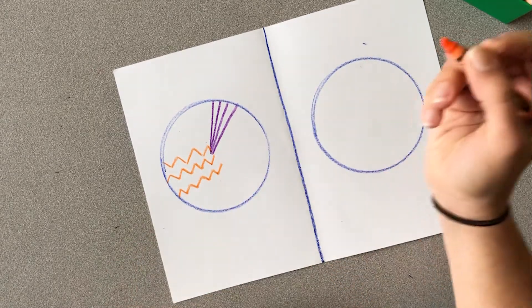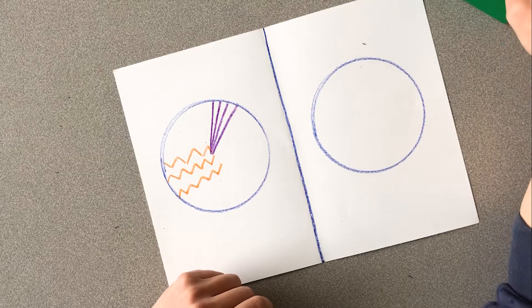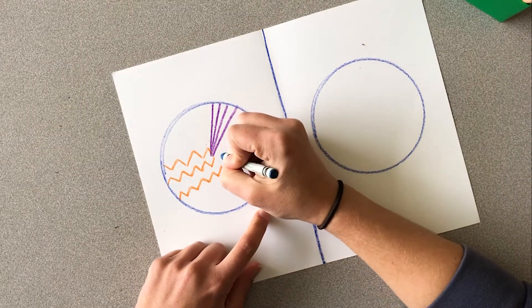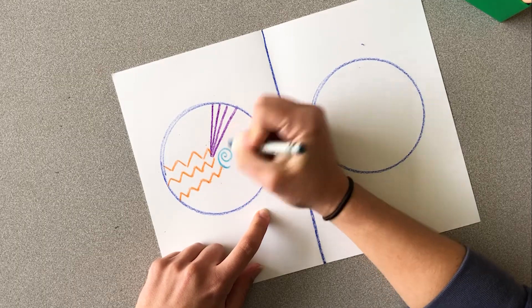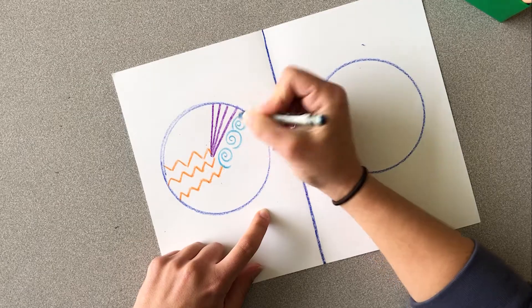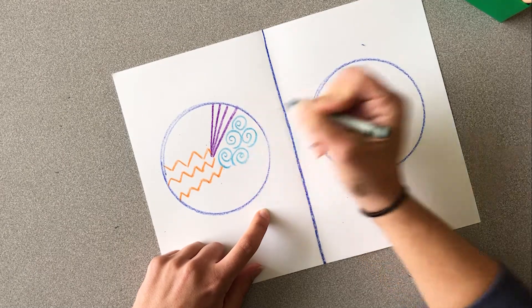Maybe just halfway across my circle. I'm going to switch colors. Ooh, I really like curly cues. Maybe over here I'll add some curly, curly, curly cues. I'll keep adding some curly cues. Maybe one more right here. Ooh, I like that.